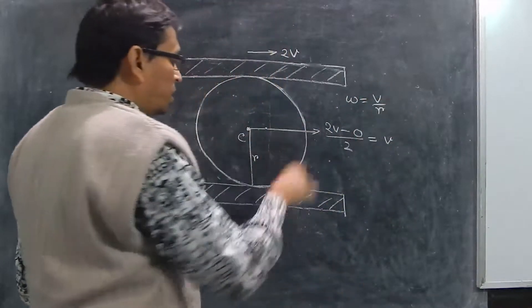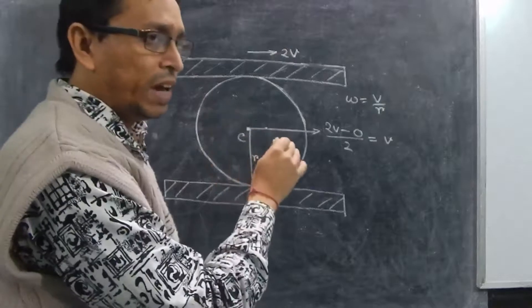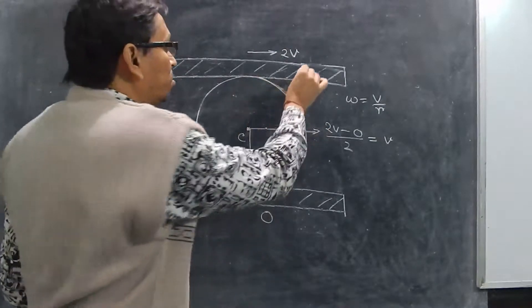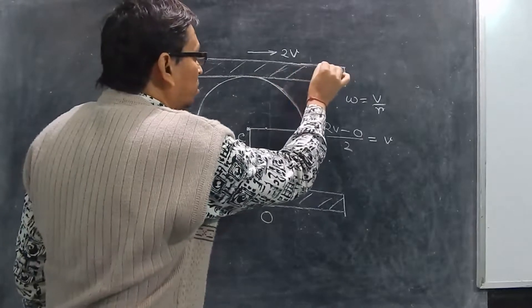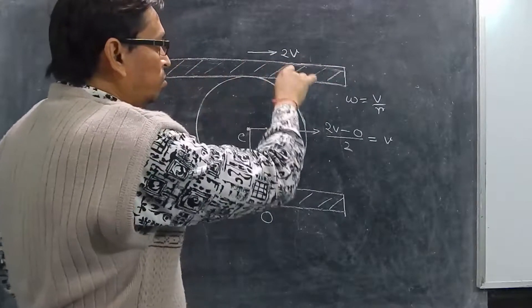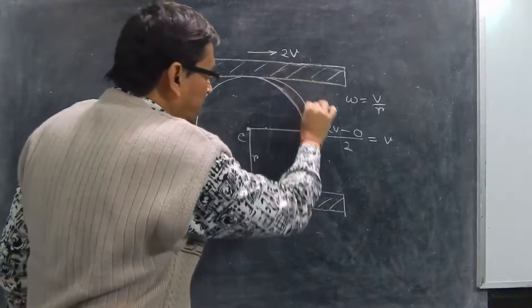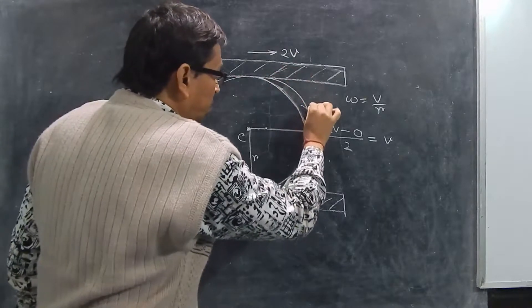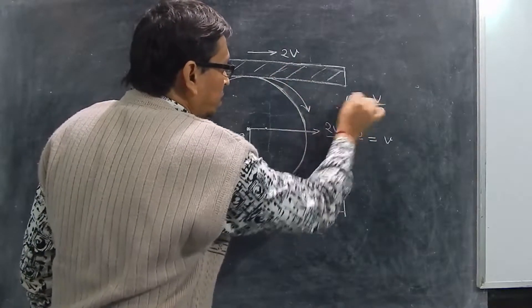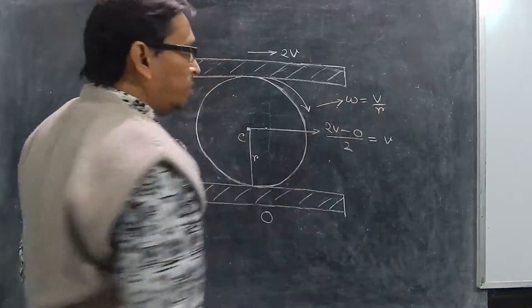The omega will originate from the plank which is moving with higher velocity. In this case, suppose this plank is moving with velocity 2V, so you can originate the omega from this side, and that omega will be equal to V by R.